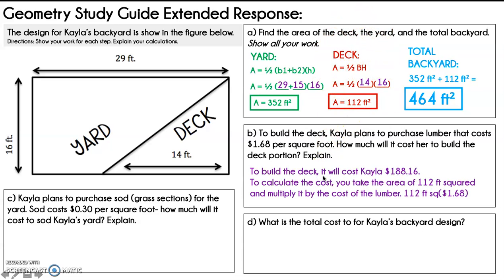And we're going to restate, fill all this in. It says, to build the deck, it's going to cost Kayla $188.16. So I want you to check that off if you got that right. Then you need to explain. It says, to calculate the cost, you're going to take the area, 112 feet squared, and you're going to multiply it times the cost of the lumber. So I showed that 112 feet squared times $1.68 gives me $188.16.